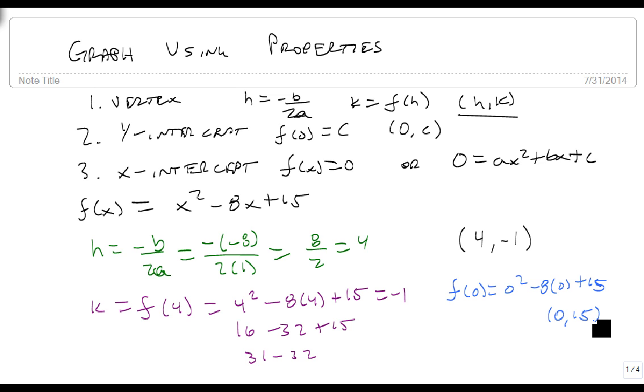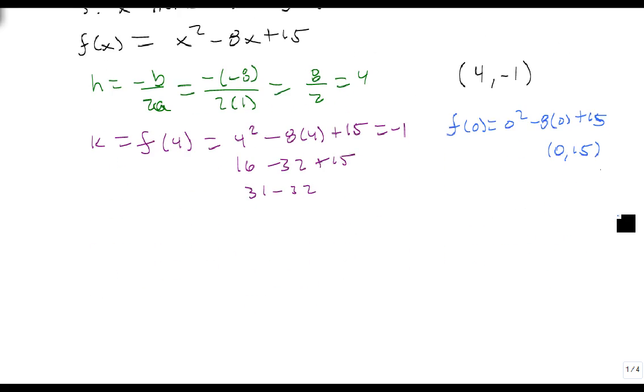And our last points that we need to find are our x-intercepts. What we do is we take 0 and set it equal to x squared minus 8x plus 15. Well in this case, it factors as (x minus 3)(x minus 5), so we get the points x equals 3, x equals 5, or the x-intercepts at (3, 0) and (5, 0).